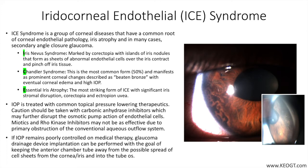ICE syndrome is categorized into three different forms: iris nevus syndrome, also known as Coogan-Reese syndrome; Chandler syndrome; and essential iris atrophy. Iris nevus syndrome is marked by correctopia with islands of iris nodules that form as sheets of abnormal endothelial cells over the iris contract and pinch off iris tissue.